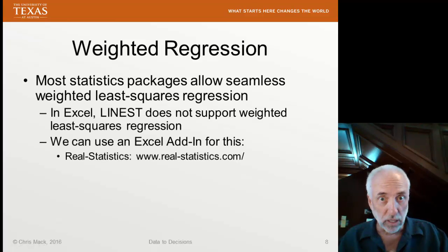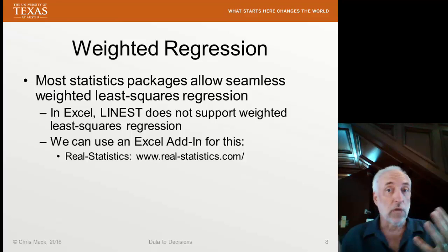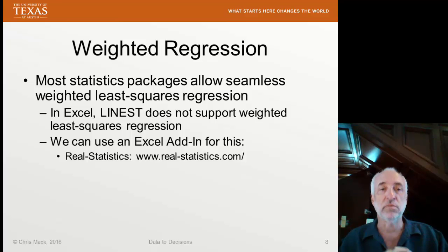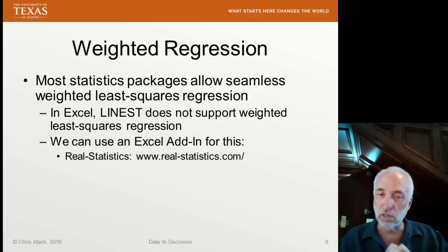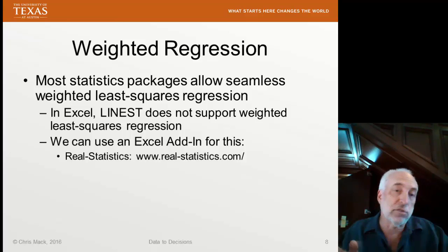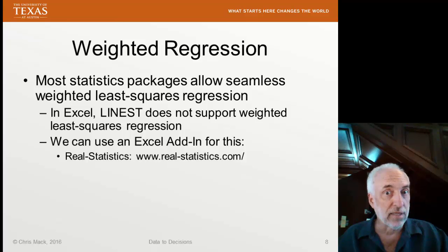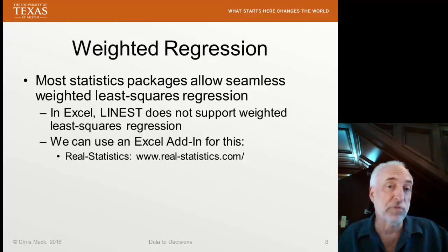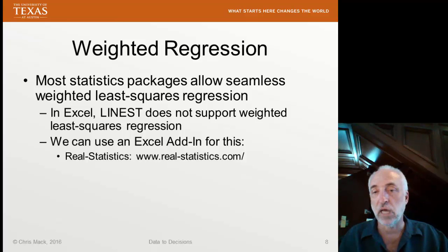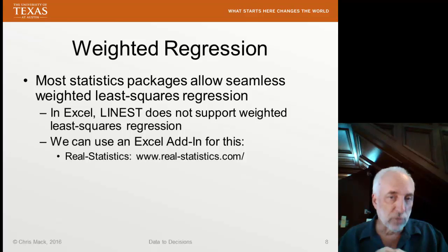For weighted regression, most statistics packages like R allow this seamlessly. In the next lecture, we'll actually do some weighted regression in R. We'll find we can use the same LM linear model function we've always used — we just need one extra column of data, which are the weights. If you use Excel, the LINEST function does not support weighted least squares regression. There is an Excel add-on called Real Statistics that I've used and like — it's free — and you can do weighted linear regression in Excel. But doing this kind of work in R is going to be a lot easier.